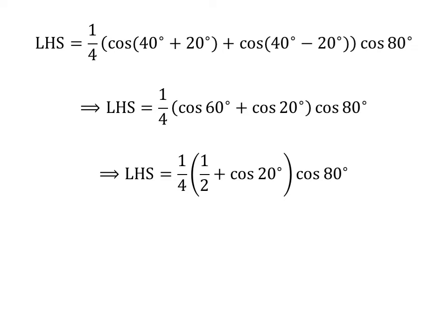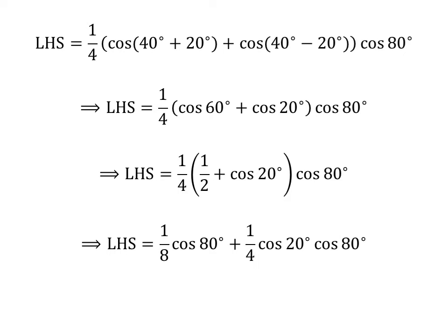Again, plugging the value of cosine of 60 degrees gives us left hand side equals 1 upon 4 times one half times cosine of 80 degrees plus 1 upon 4 times cosine of 20 degrees times cosine of 80 degrees. Further multiplication gives us left hand side equals 1 upon 8 times cosine of 80 degrees plus 1 upon 4 times cosine of 20 degrees times cosine of 80 degrees.